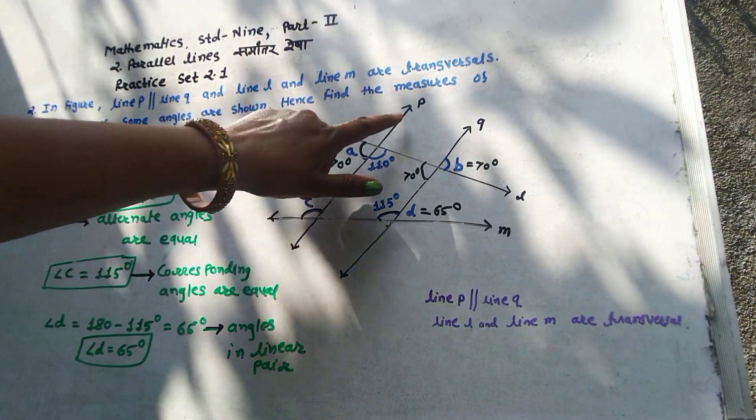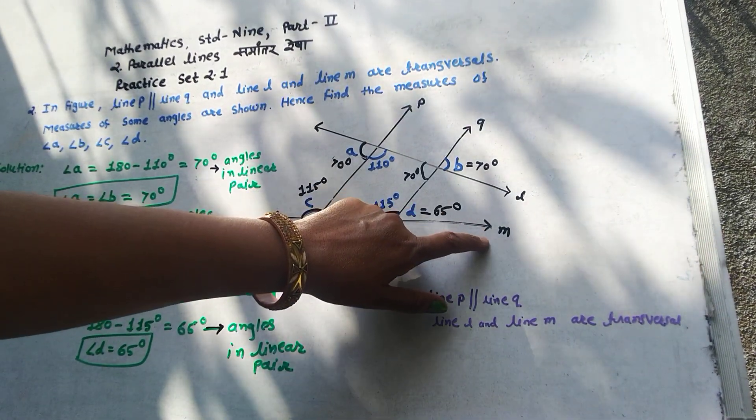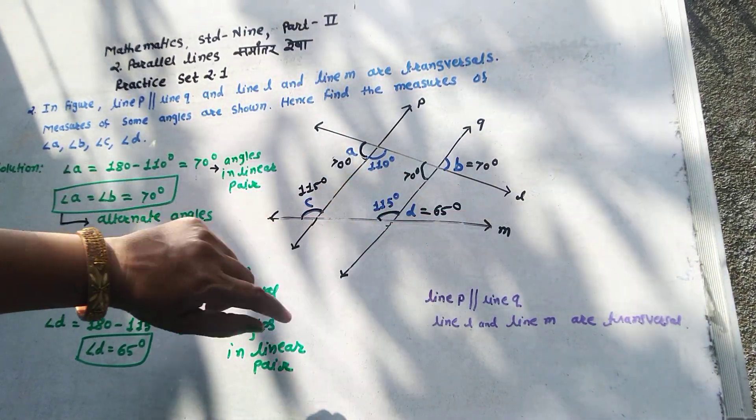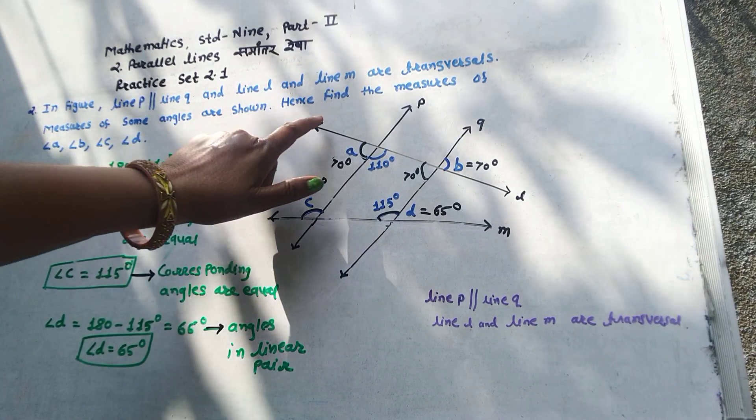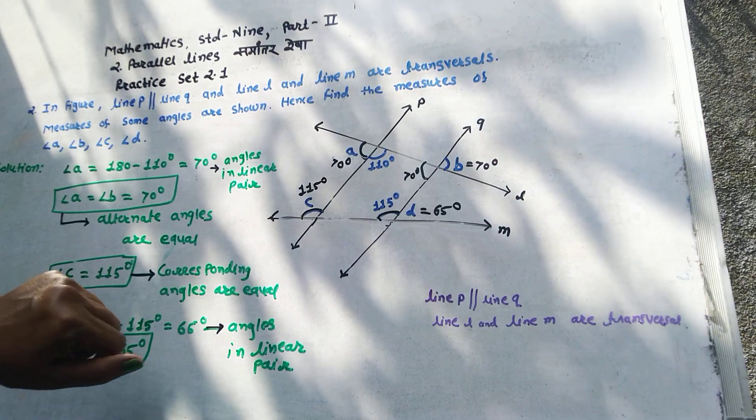In a figure, line P and line Q are parallel and line M and line L are transversal. The measures of some angles are shown. Hence, find the measures of angle A, angle B, angle C and angle D.